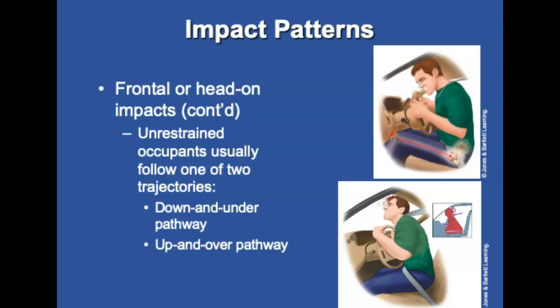Shotgun wounds result from tissue impact by numerous projectiles. The greater the distance from the muzzle to the target, the more dispersion the projectiles will have. Wounding potential depends on the powder charge, the size and number of pellets, and the dispersion of the pellets.